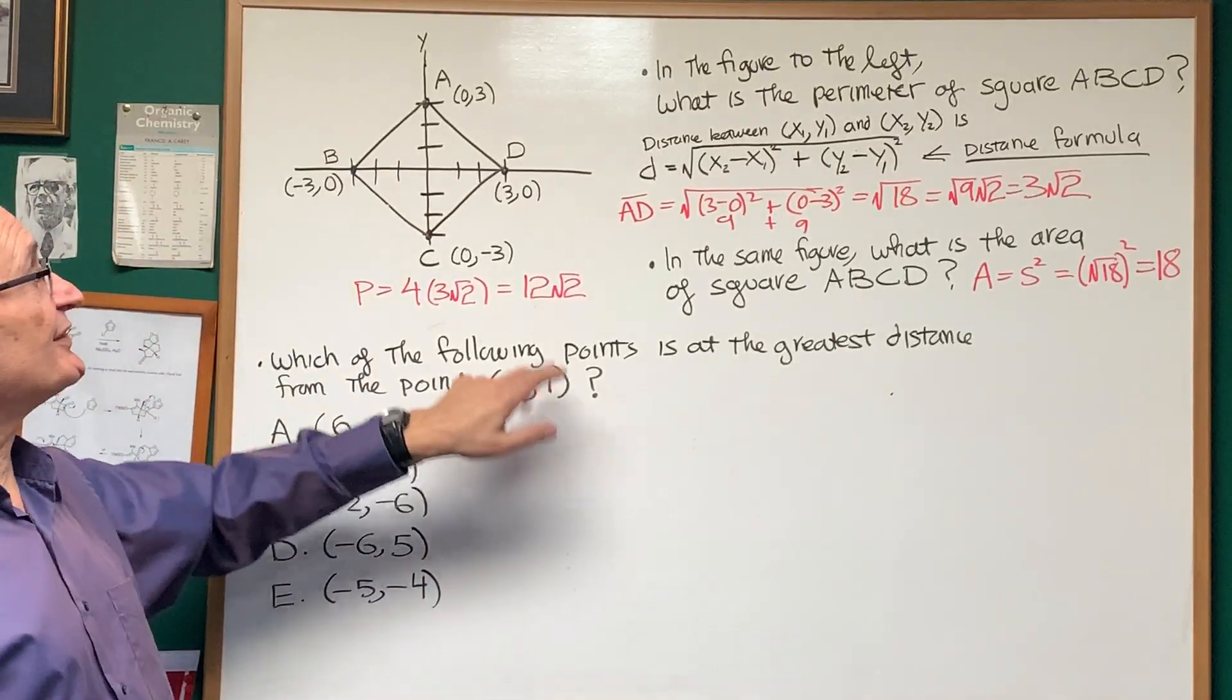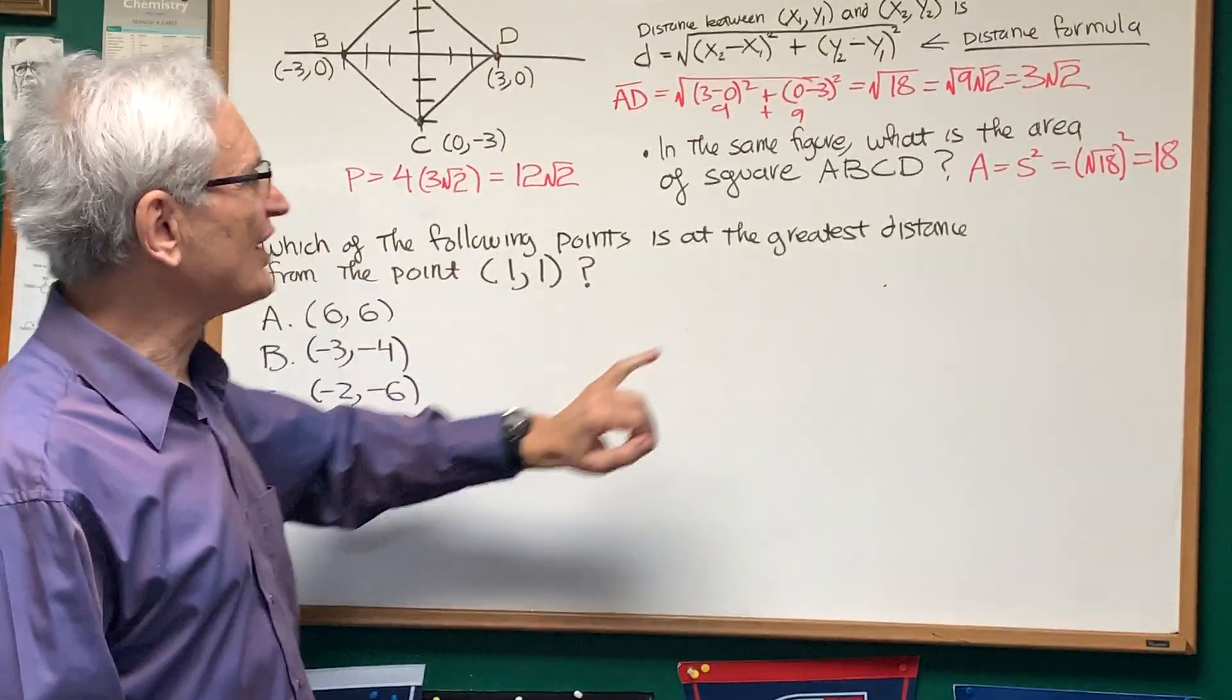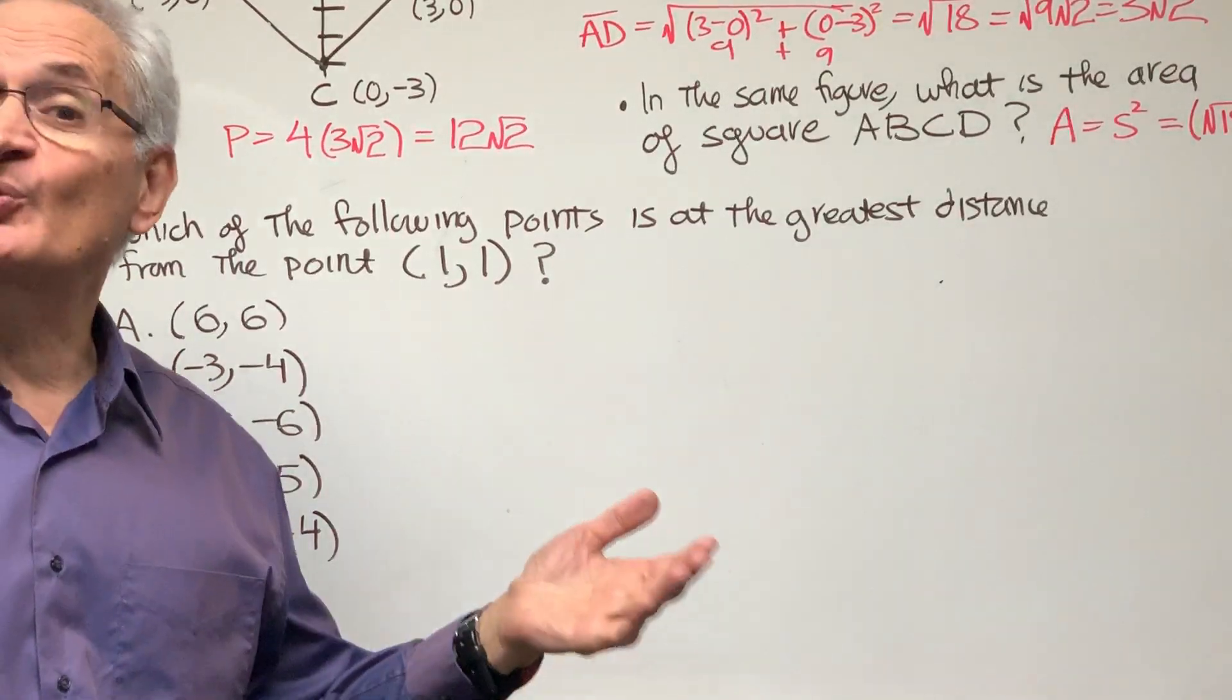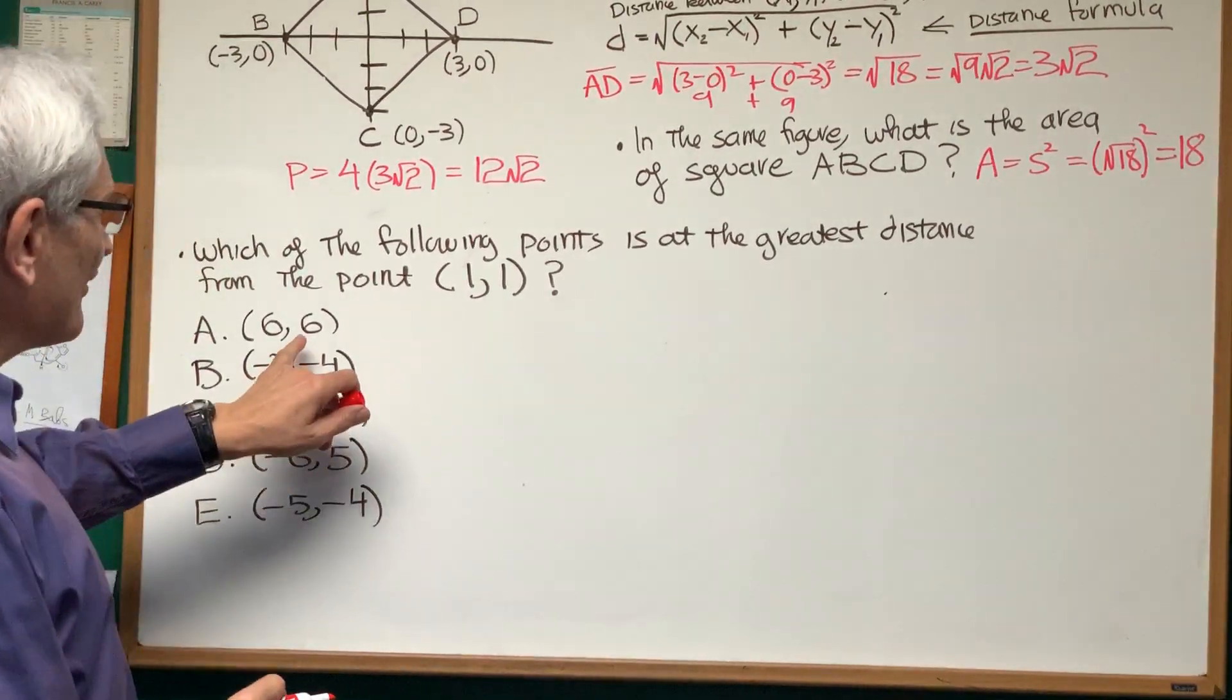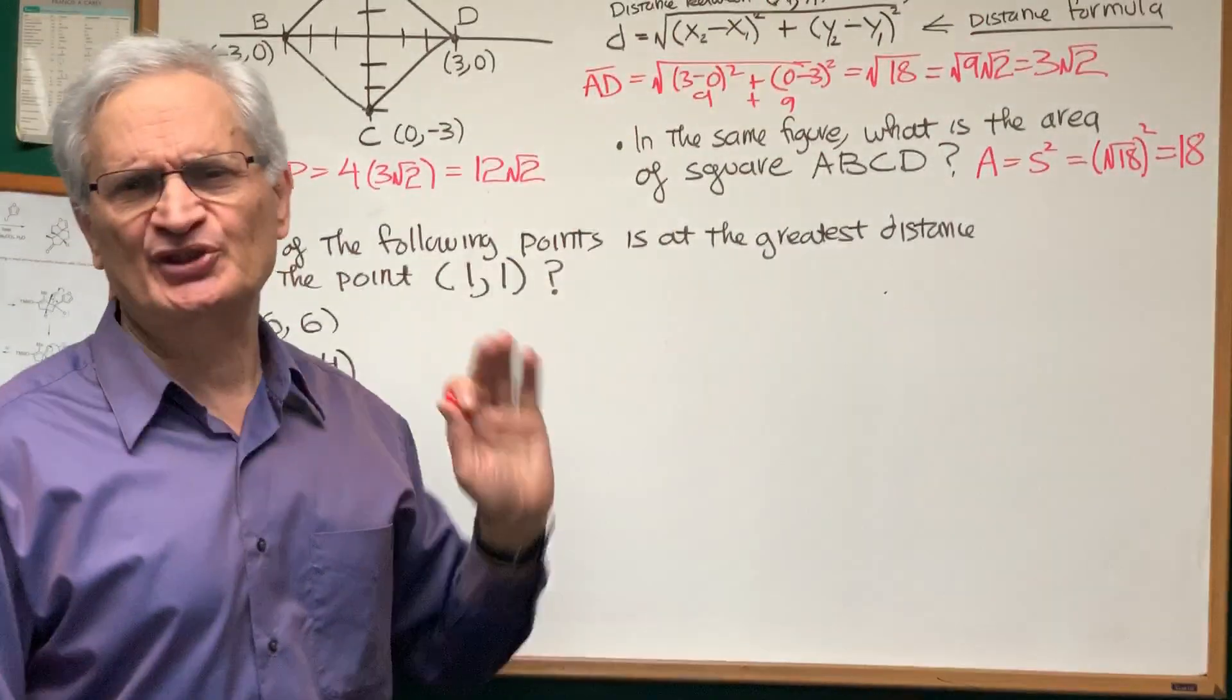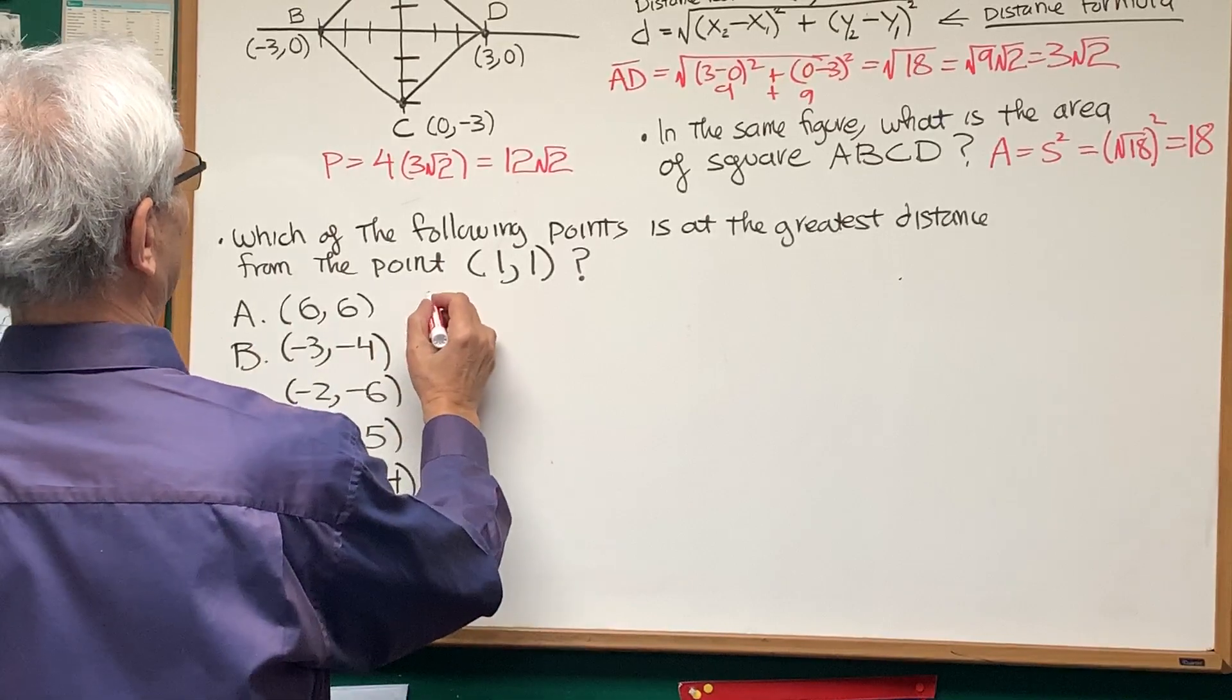Now, this is a completely different problem that doesn't have anything to do with this diagram, but it's one that could very well show up. Which of the following points is at the greatest distance from the point (1,1)? And we have a series of points here. Well, the only way to solve this is we're going to use the distance formula. So let's apply the distance formula between each of these points and (1,1). We can dispense with the square root, because if the value under the square root is greatest, that's going to be the greatest distance.